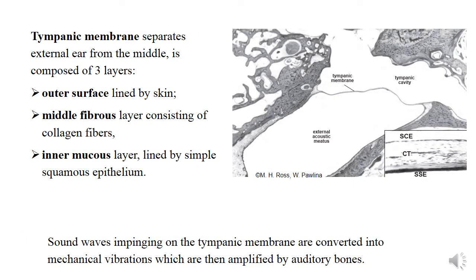Tympanic membrane separates external and middle ear. It is composed of three layers: outer layer or skin layer lined by the skin; middle layer or fibrous layer has an outer layer with radial fibers and an inner layer with circular fibers; and inner mucous layer of simple cuboidal epithelium, which originated from the endoderm of the first pharyngeal pouch. This epithelium is simple squamous.